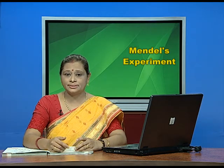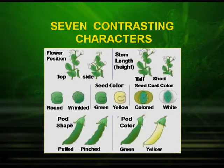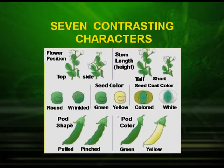Let us see what were the seven contrasting characters studied by Mendel. The first was flower position — terminal or axillary. The second was stem length — tall or short. Another was seed shape — round or wrinkled. Seed color — green or yellow. Seed coat color — colored or white. Pod shape — puffed or pinched. And pod color — green or yellow. These were the seven contrasting characters studied by Mendel.